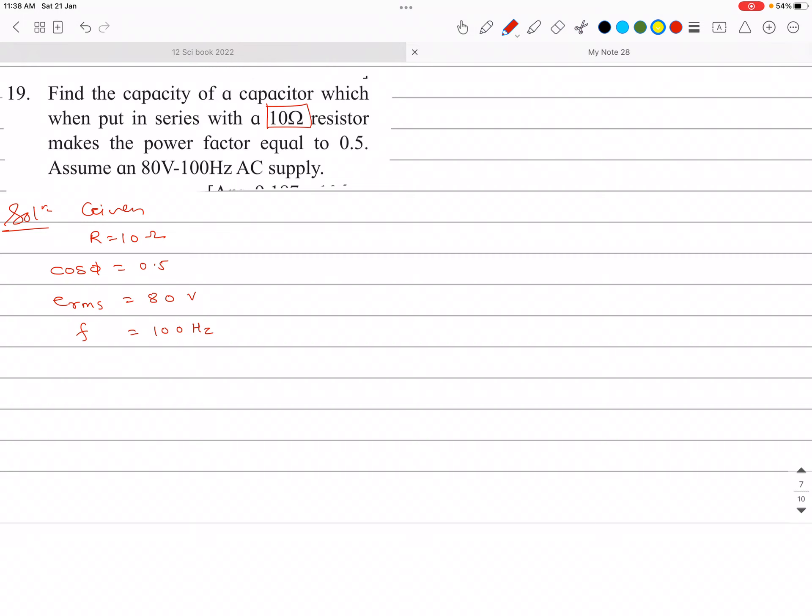And we have to find out capacity. So if they given the power factor we can use a formula of power factor. Cos phi is equal to R by Z.